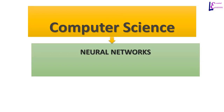In artificial intelligence, researchers have created computing models that work like neurons in the human brain. These models are called artificial neural networks. Artificial neural networks can be trained to solve a variety of complex problems in different fields of study.